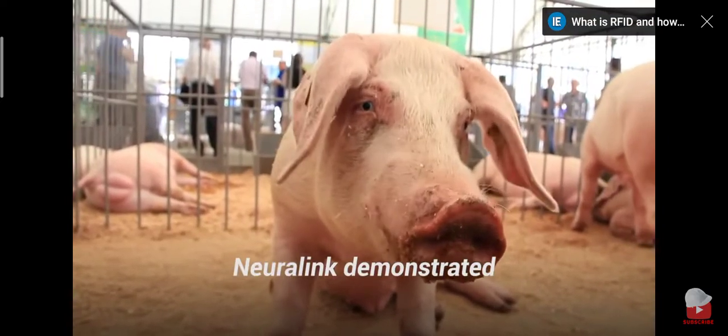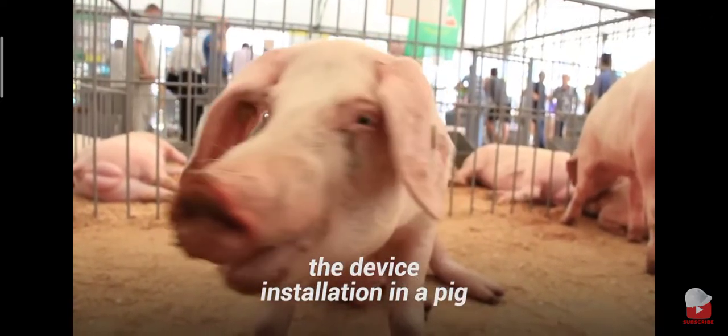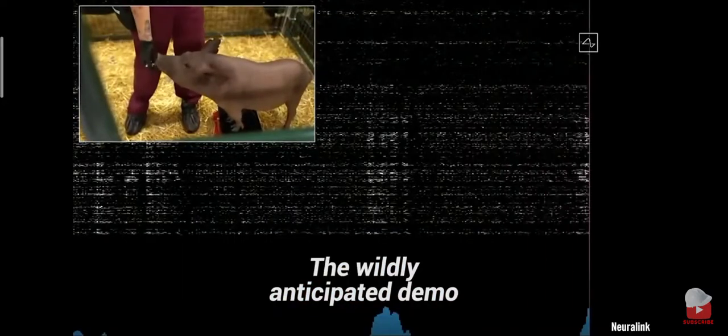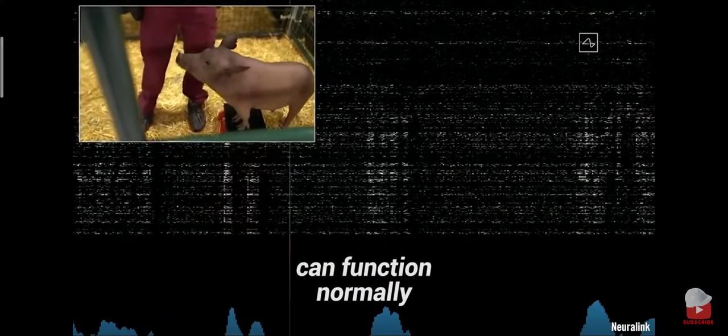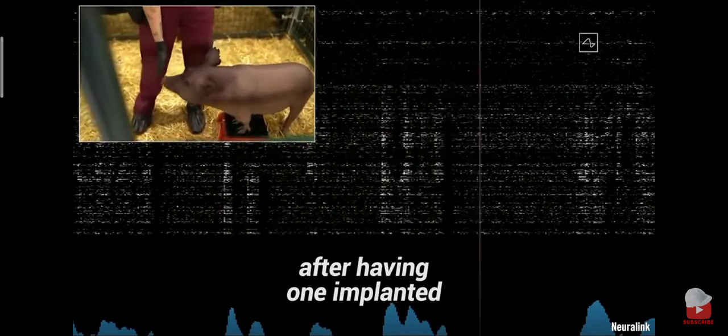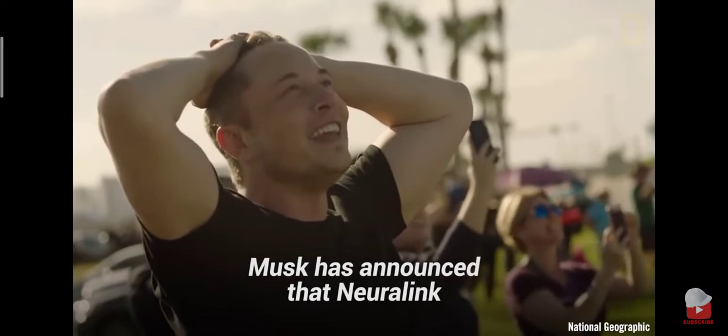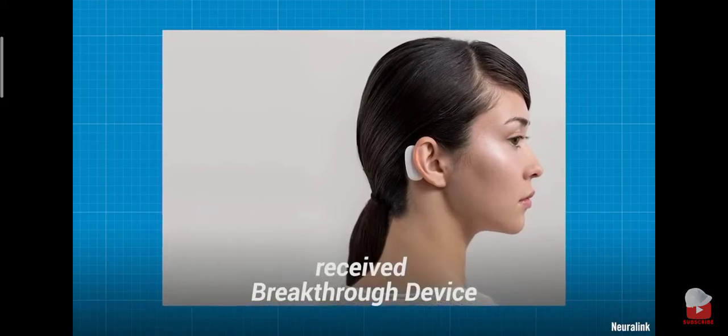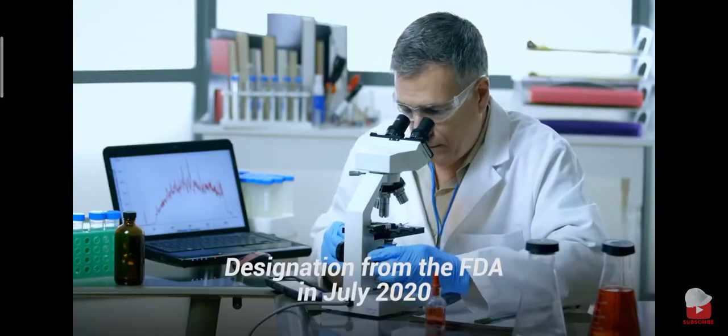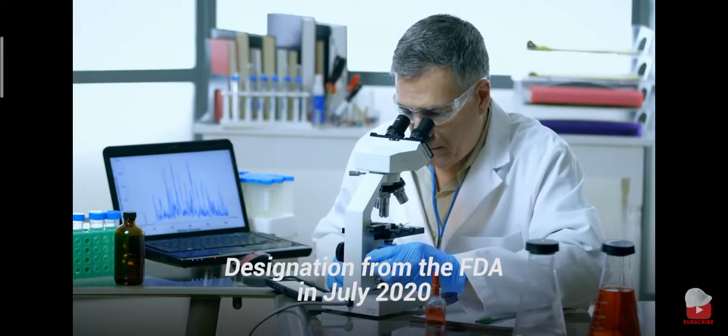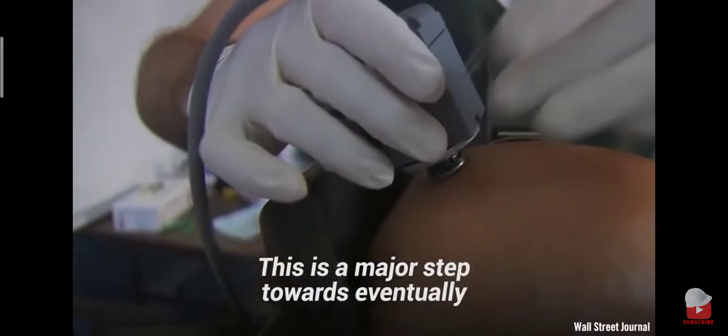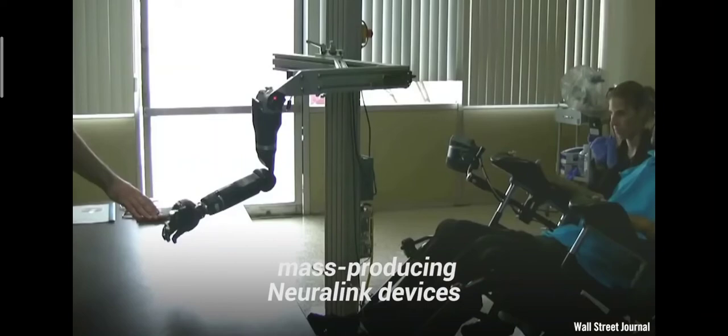In 2020, Neuralink demonstrated the device installation in a pig. The wildly anticipated demo showed that a living animal can function normally after having one implanted and then removed. Musk has announced that Neuralink received breakthrough device designation from the FDA in July 2020. This is a major step towards eventually mass-producing Neuralink devices.